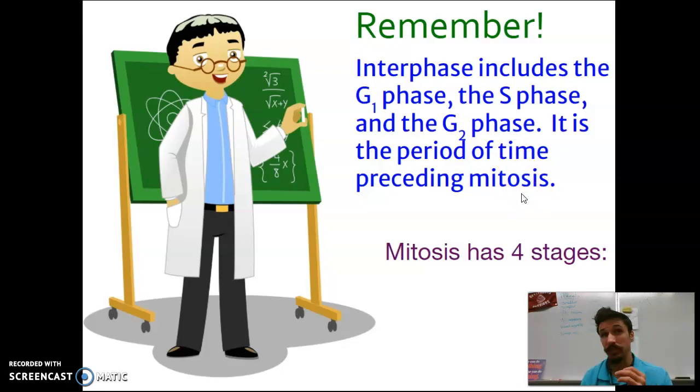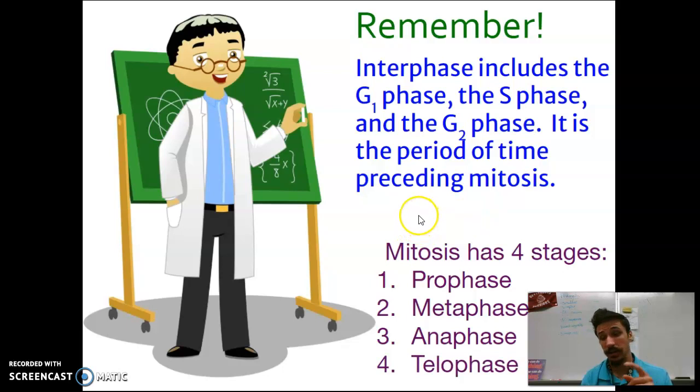The mitosis stage of the cell cycle has four steps: prophase, metaphase, anaphase, and telophase. Now we're going to spend the remaining time in this screencast looking at these four phases independently and identifying what the cell looks like because the cell is going to go through some physical changes.